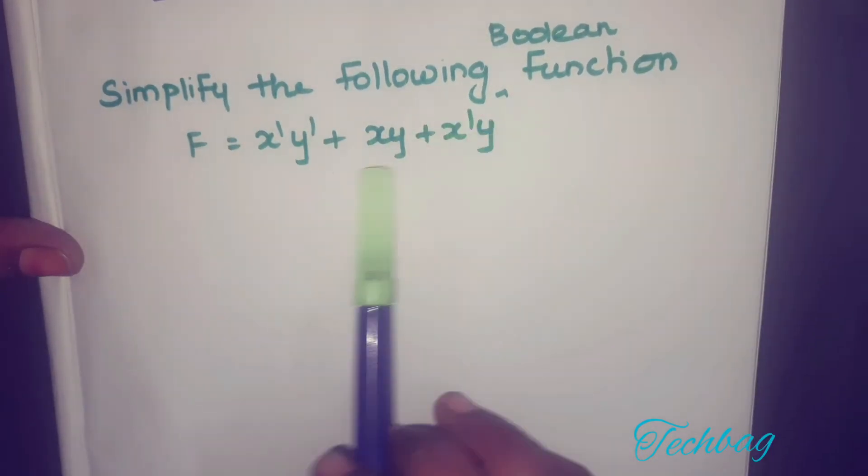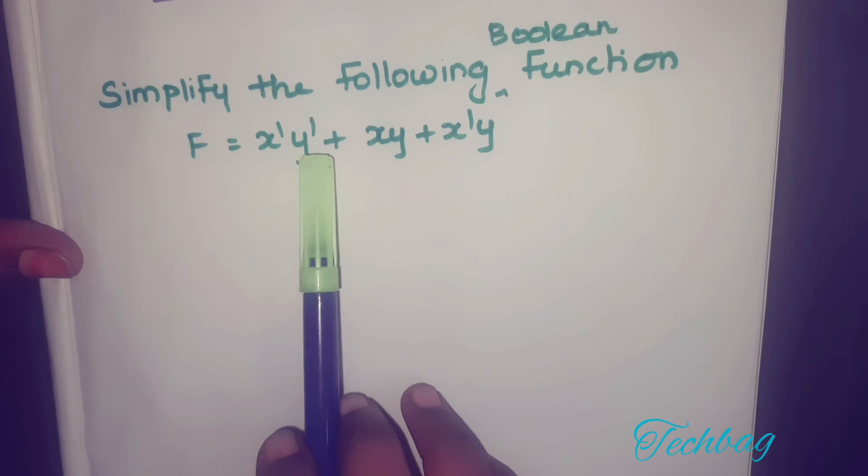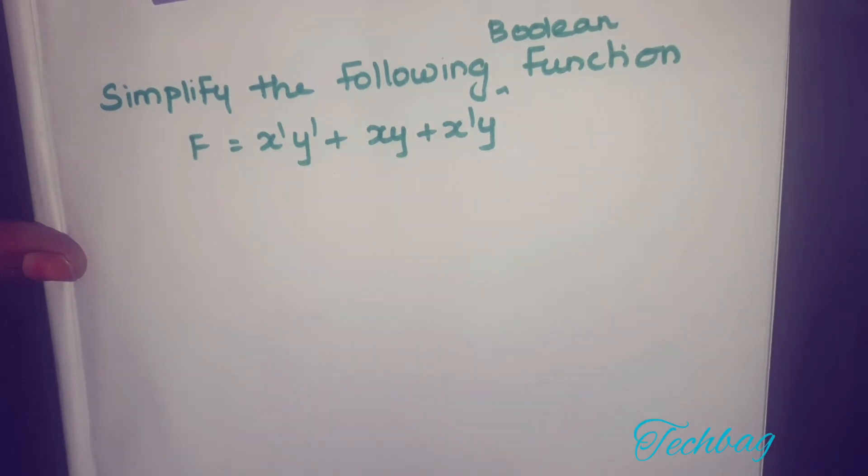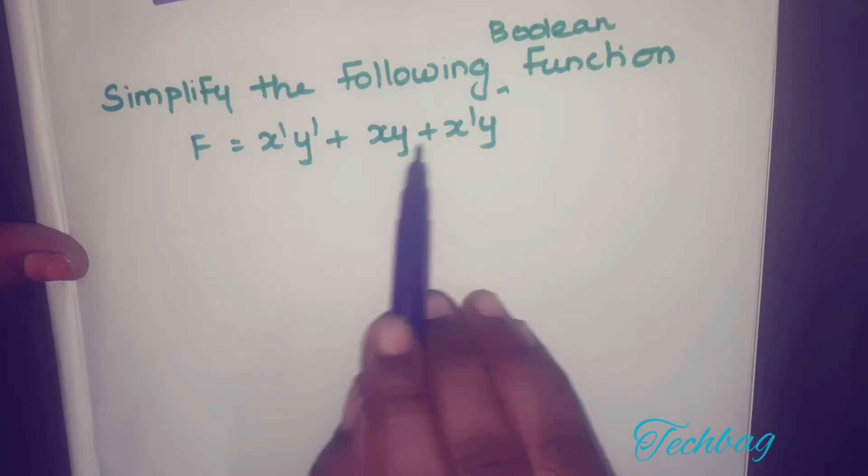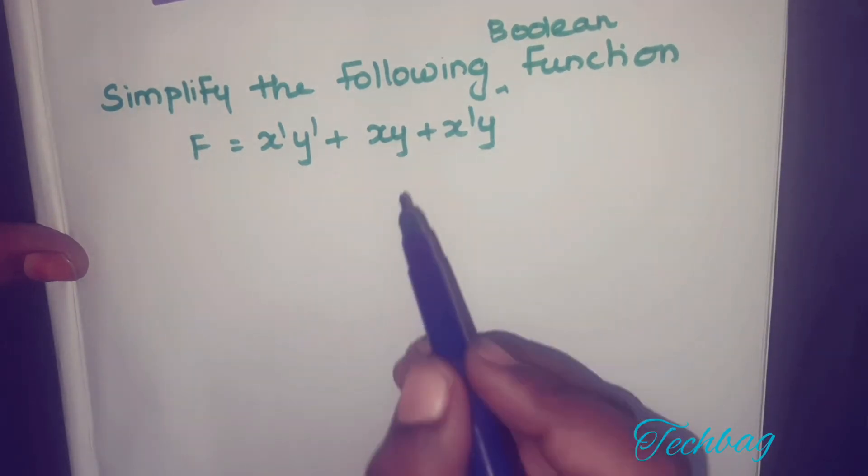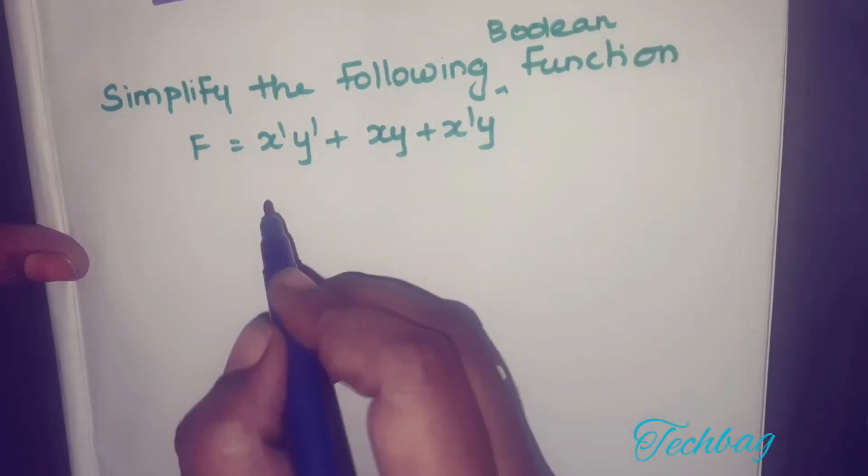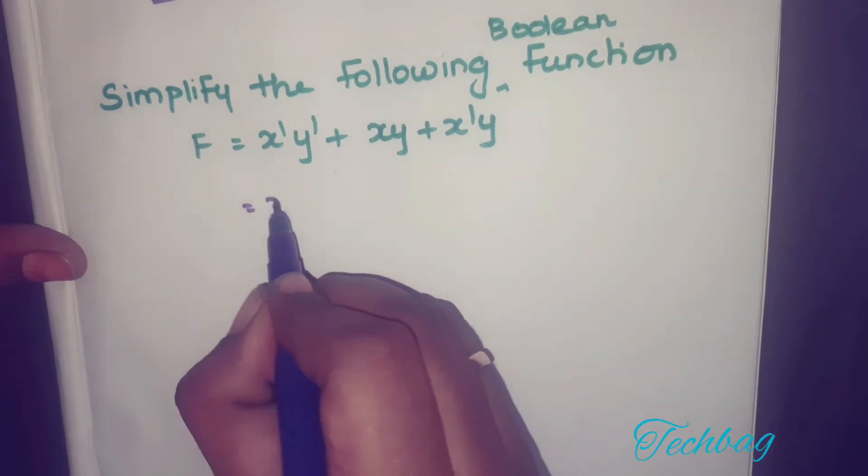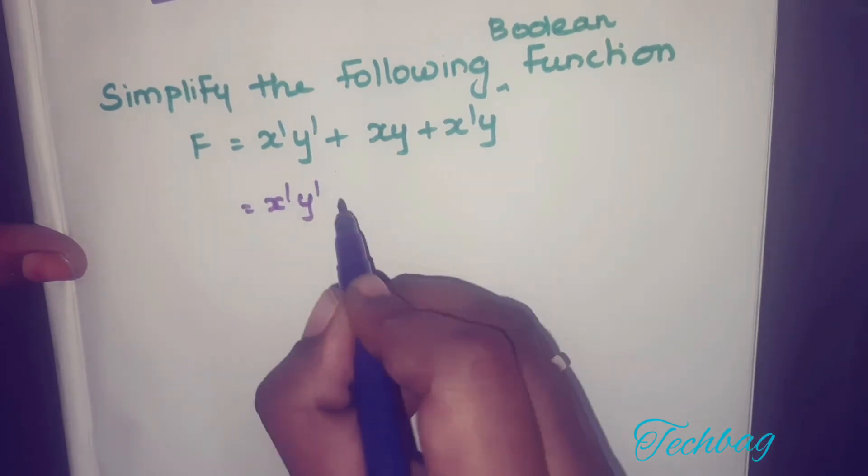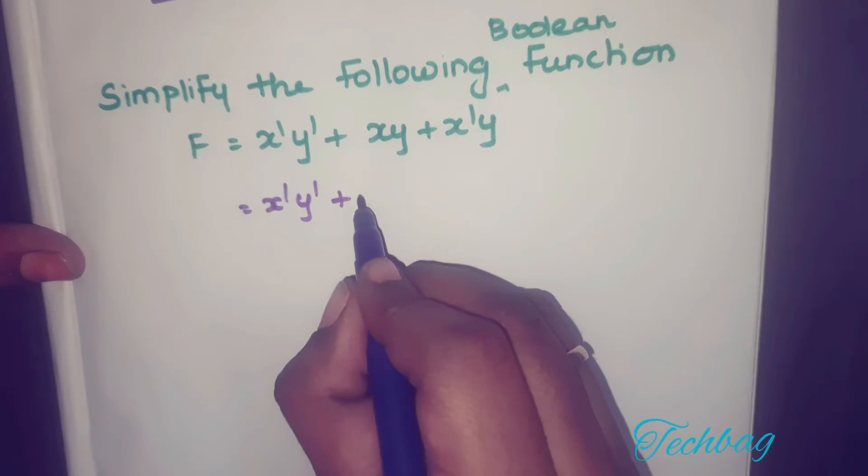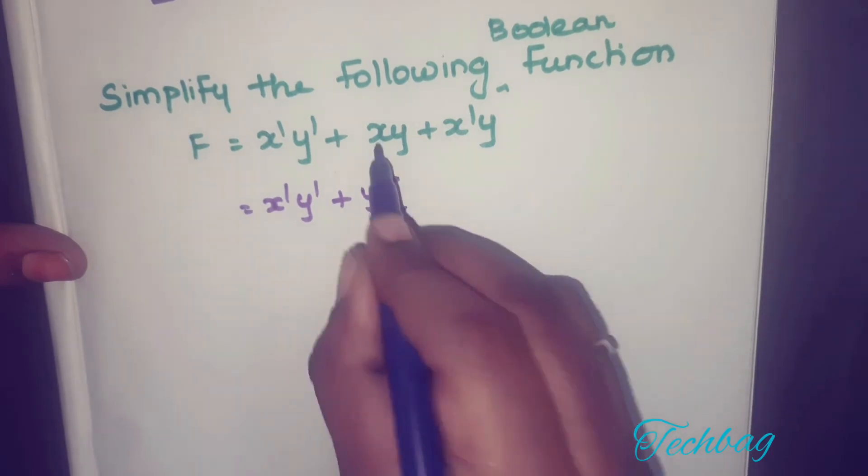Simplify the following Boolean function: F = x'y' + xy + x'y. In the last two terms, y is common. If you take y as a common term, you get x'y' plus, if you take y common, you get y times the remaining terms.